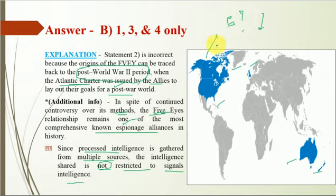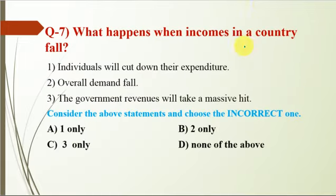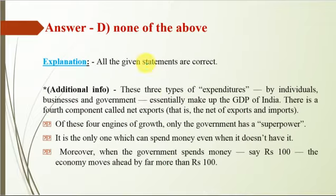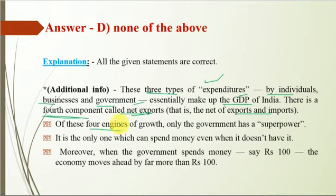Question 7: What happens when incomes in a country fall? Statement 1: individuals will cut down their expenditure. Statement 2: overall demand falls. Statement 3: government revenue will take a massive hit. All the given statements are correct, so the option is D — none of the above is incorrect. The three types of expenditure — by individuals, businesses, and government — essentially make up GDP, along with a fourth component: net exports. Of these four engines of growth, only the government has the superpower to spend money even when it doesn't have it, and government spending of Rs. 100 moves the economy by far more than Rs. 100.